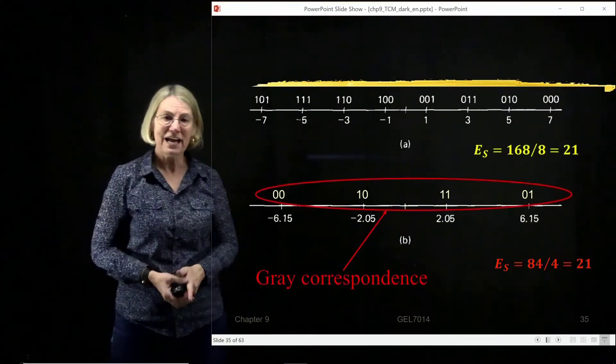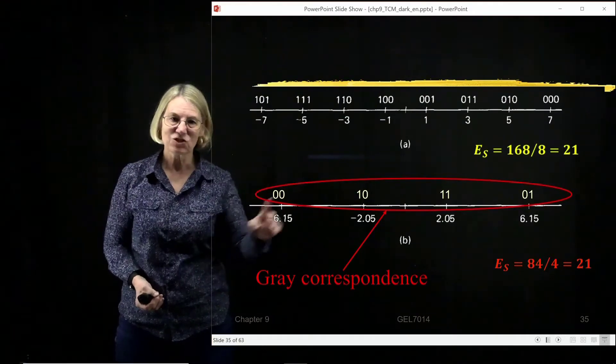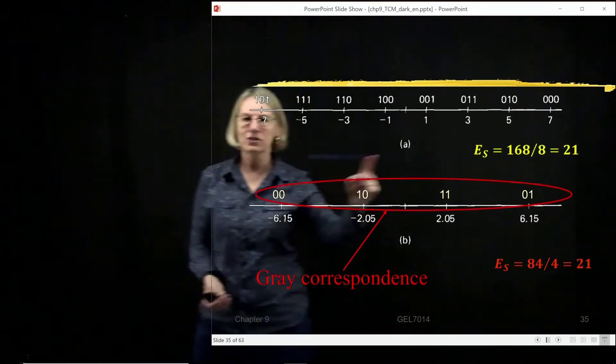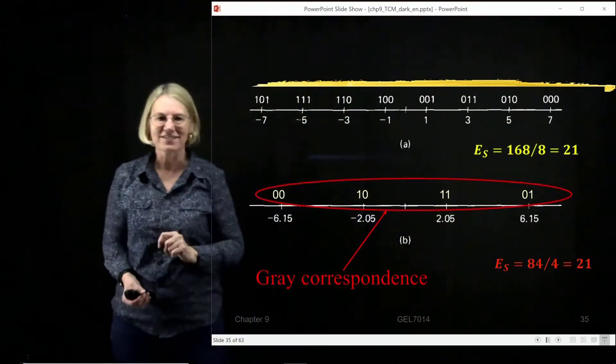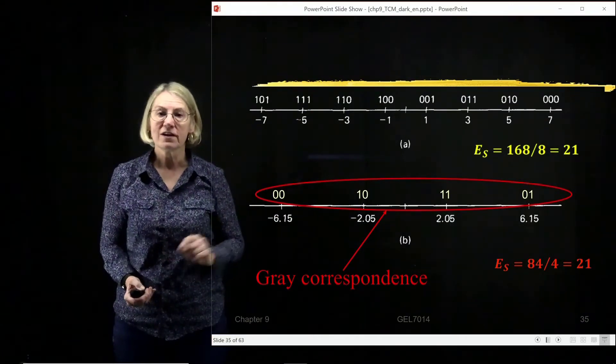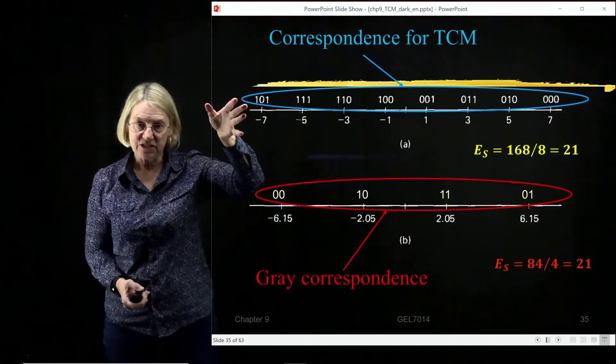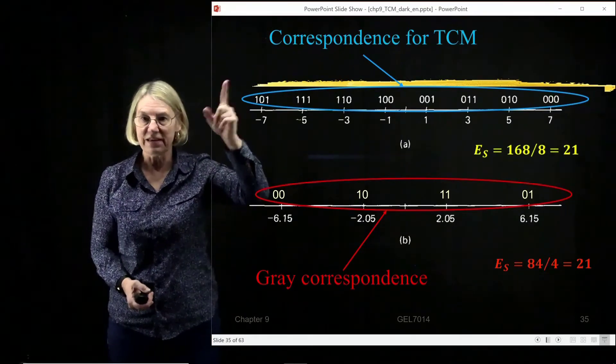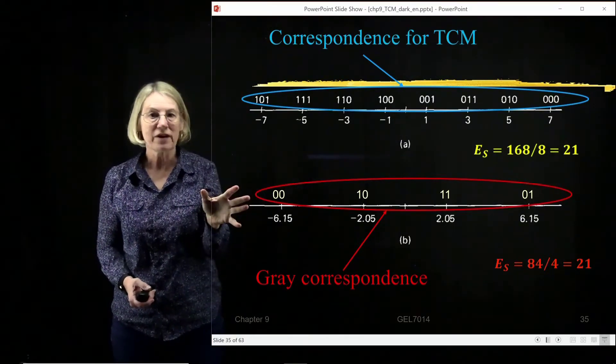Oh, one thing before we leave. You'll notice that in this choice, I have made a good gray-coded correspondence. But of course, for the trellis-coded modulation, it will not be a gray-code. So this would be the gray-code here.